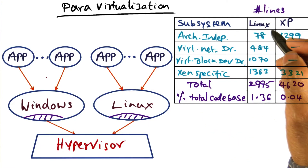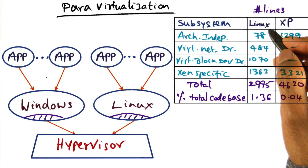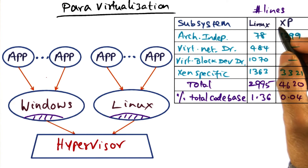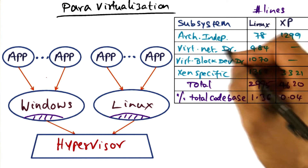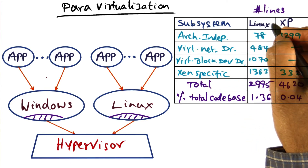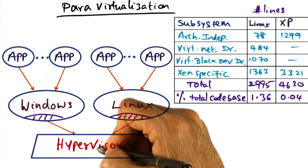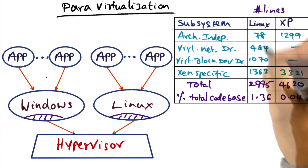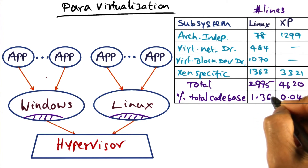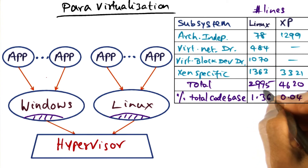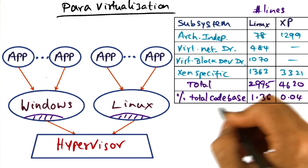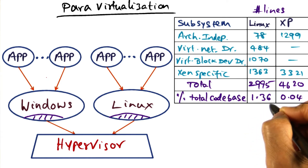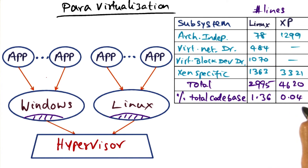This table is showing you the lines of code that the designers of Xen hypervisor had to change in the native operating systems. The two native operating systems they implemented on top of Xen hypervisor are Linux and Windows XP. In the case of Linux, for instance, the total amount of the original code base that had to be changed is just about 1.36%.